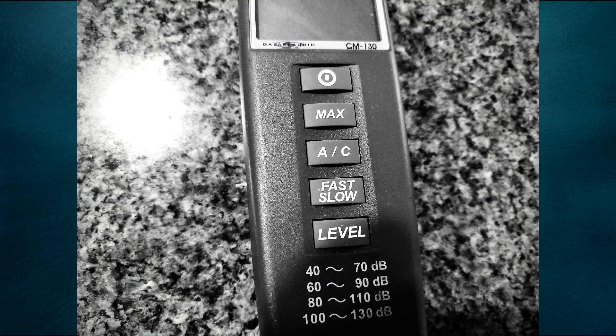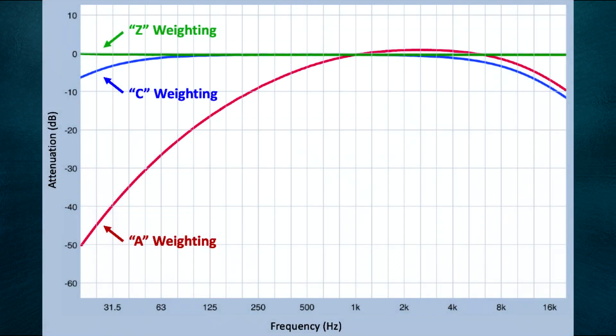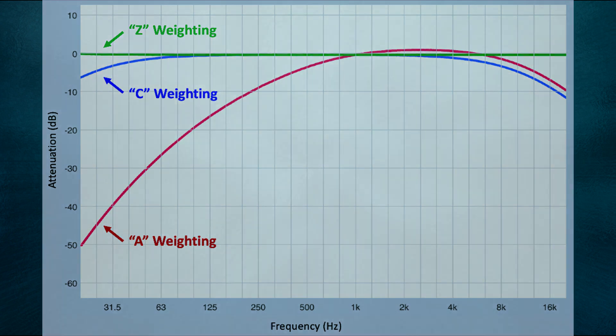Most meters offer a choice of A-weighting or C-weighting, and you might see an unweighted measurement referred to as Z-weighting. A-weighting is important because it's specified in a lot of noise exposure limits. So when we make an SPL measurement, we need to make sure to include a suffix to indicate which frequency weighting was used.